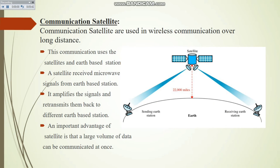Next, and most important, is communication satellites. Communication satellites are used in wireless communications over long distances. You can see this diagram — at the top is a satellite, and below are the sending earth station and the receiving earth station. The satellite amplifies the data from the sending station and then retransmits it to the receiving earth station. This communication uses satellites and earth base stations.